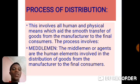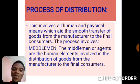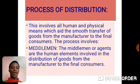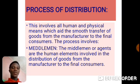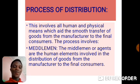We are going to take them one after the other. Middleman: the middlemen or agents are the human elements involved in the distribution of goods from the manufacturer to the final consumers. These are human beings involved in the transfer and delivery of goods from the manufacturer to the final consumers.